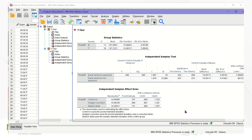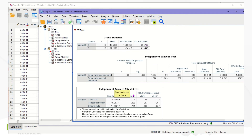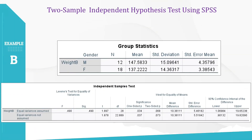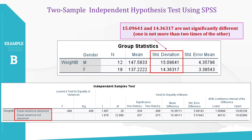Now we have the result tables. We will use two tables for the decision. Like before, there are two lines of results in the second table. To select the adequate line, we use the sample standard deviations from the first table to estimate variance values, since variances are squared standard deviations. The standard deviation for the male group is approximately 15.1, while 14.4 for the female group. They are not significantly different, so we use the equal variances assumed line again.